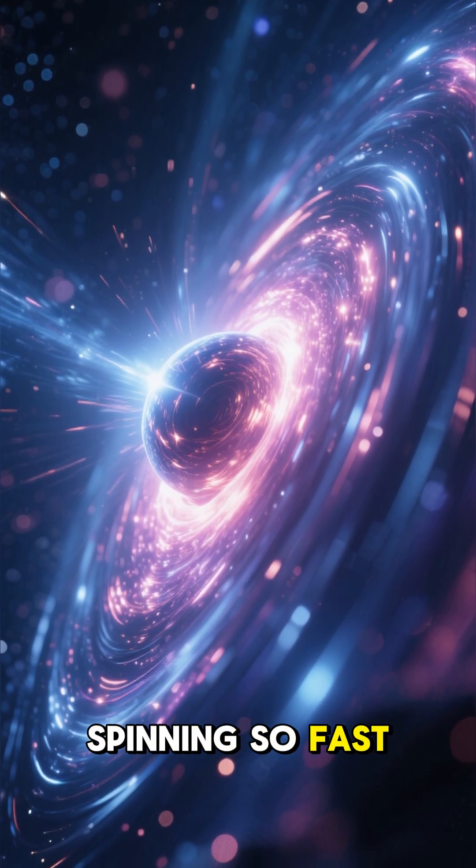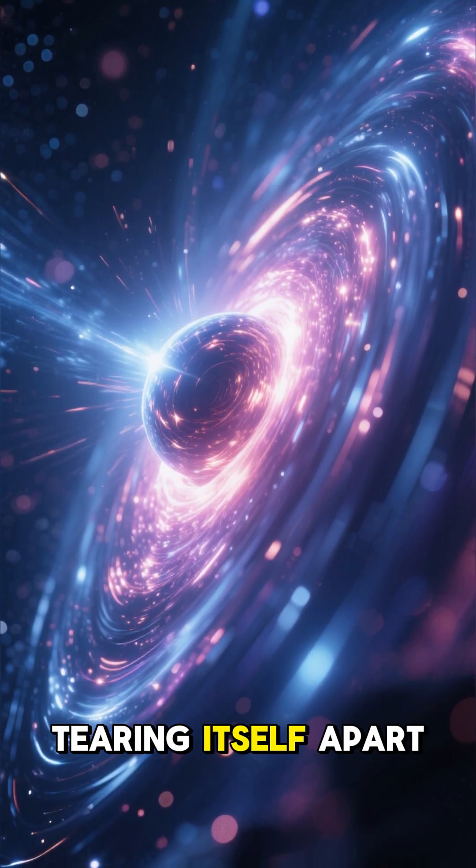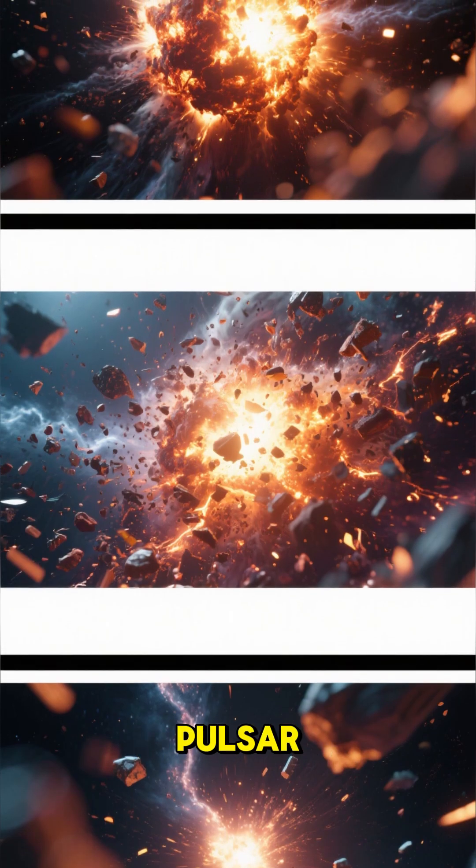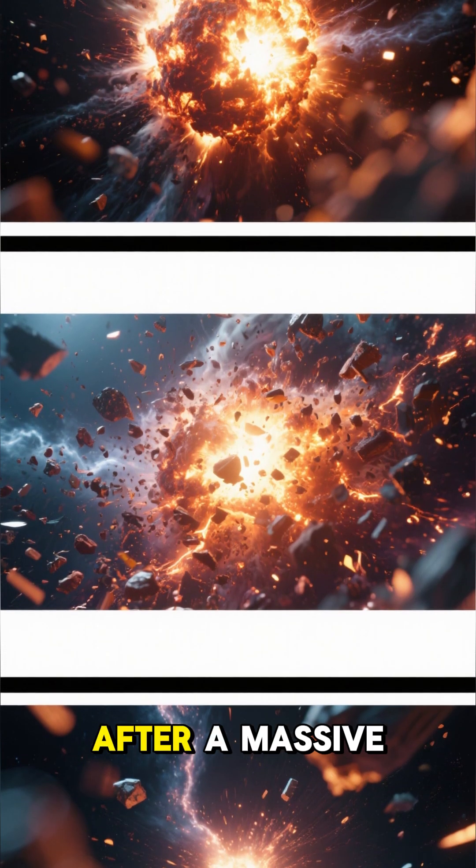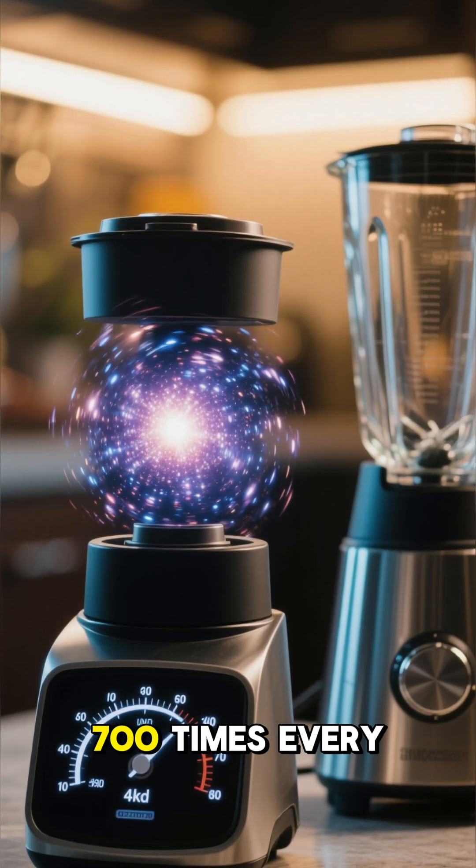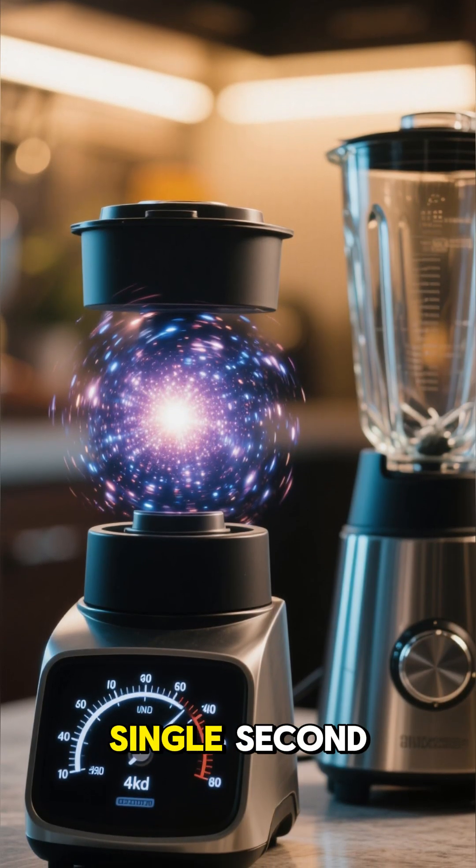Imagine a star spinning so fast, it's on the verge of tearing itself apart. That's a real thing. It's called a pulsar, and it's what's left after a massive star goes supernova. Some of these things rotate over 700 times every single second.